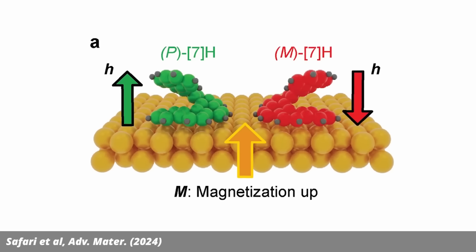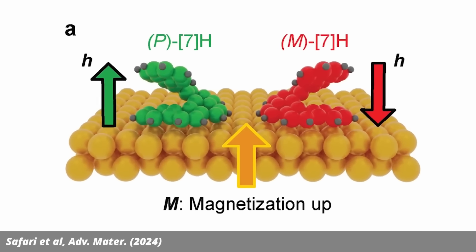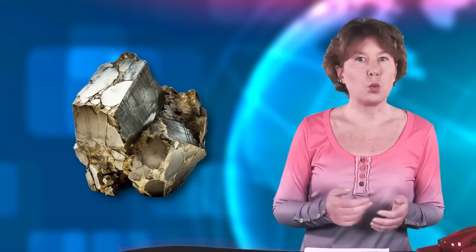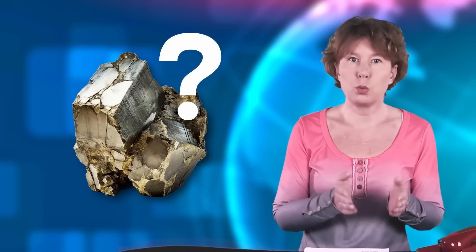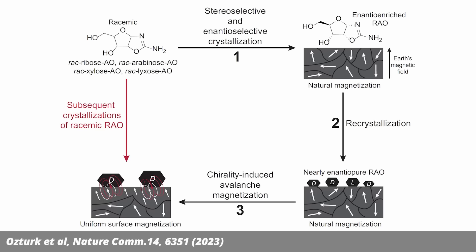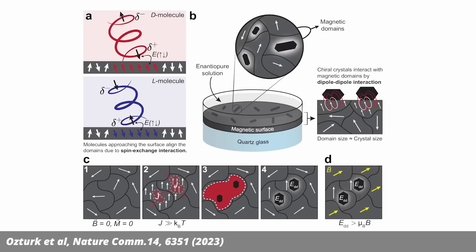Their idea is that this preferential accumulation of one handedness on certain kinds of rocks would have made it much easier for complex molecules to be formed there. However, this leaves the question of what the magnetization of the rock has to do with the magnetic field of Earth, because the magnetic field of Earth is very weak, and so is the natural magnetization of materials found in nature. Another group has argued that the preferential attachment of some molecules feeds back into the magnetic material, making it more strongly magnetic — so basically, some magnetic materials amplify the magnetic field of Earth, and that kickstarts the process.